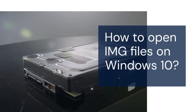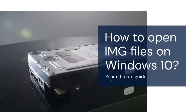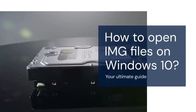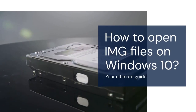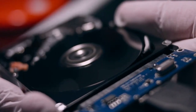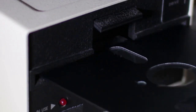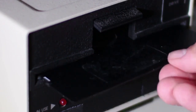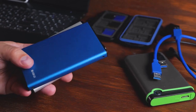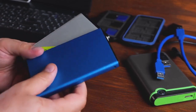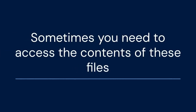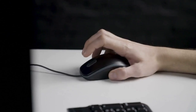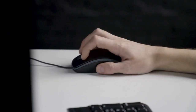Hello everyone, welcome. Today, we're going to learn how to open IMG files on Windows 10. IMG files are disk image files. They contain all the information stored on a disk. This can include CDs, DVDs, or even hard drives. Sometimes you need to access the contents of these files, so let's dive into how you can do that.